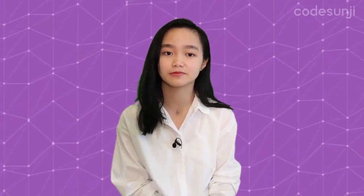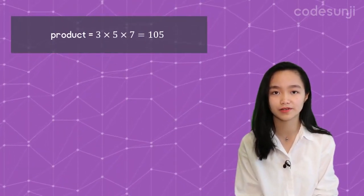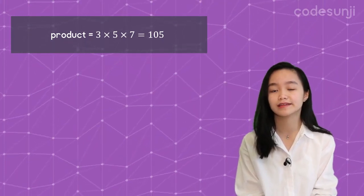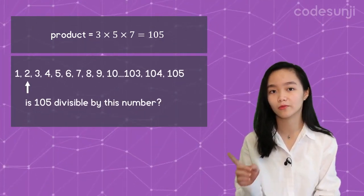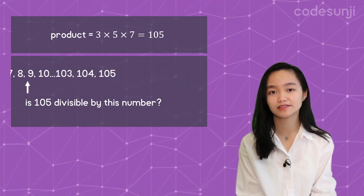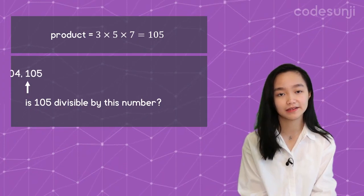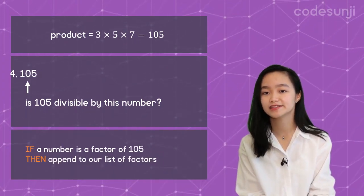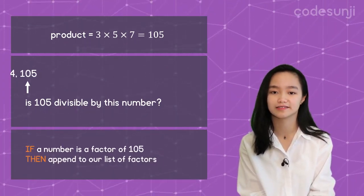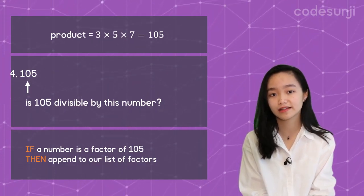What if we just implemented the method we used earlier with code? Let's multiply all of the given numbers and store it as product, then go through each number from 1 to the product and check if the product is divisible by that number, which would mean it is a factor. If it is, add it to a list of factors, and finally output the number of items in that list.